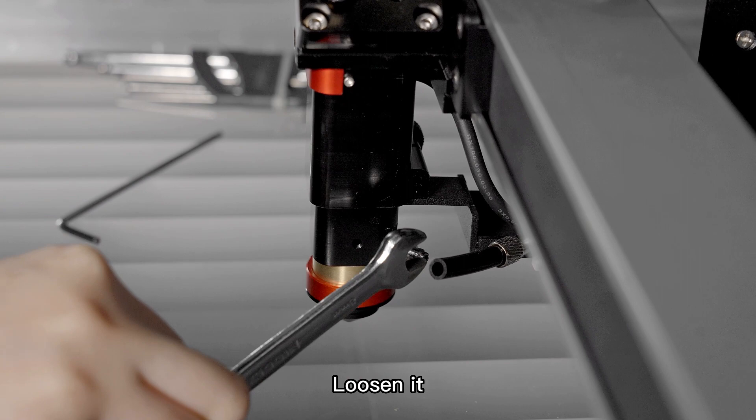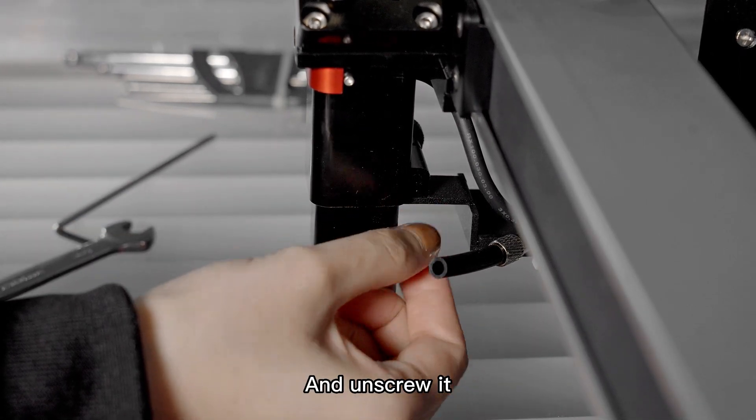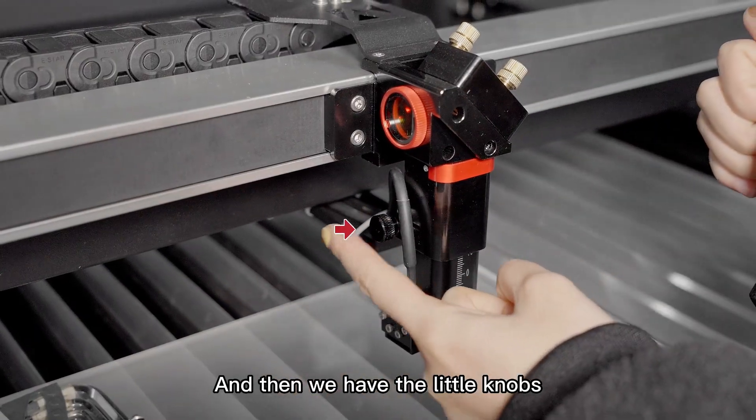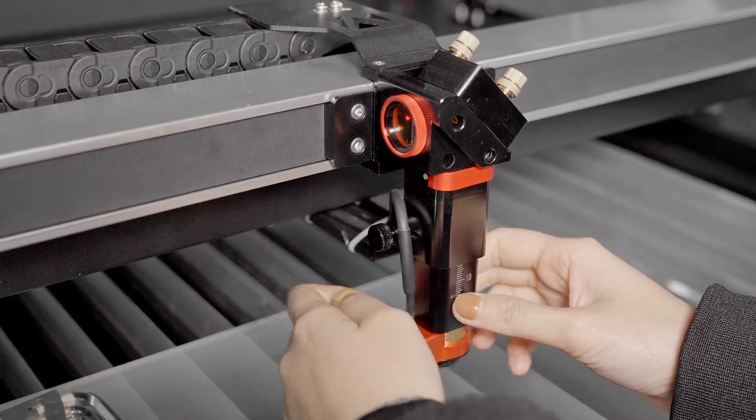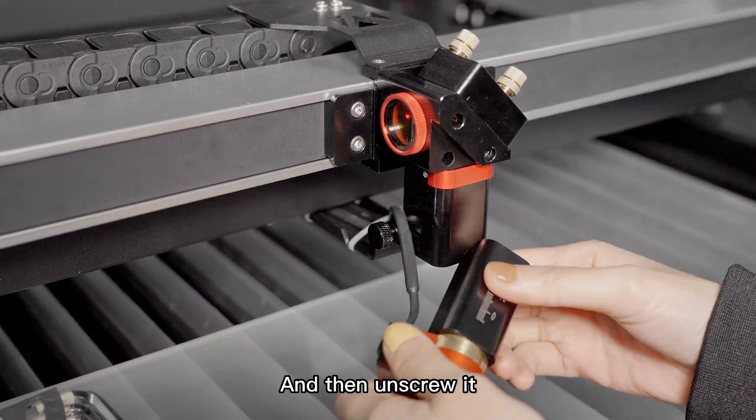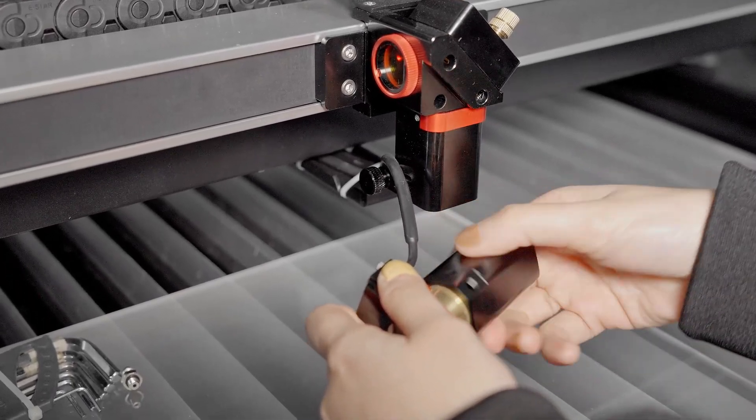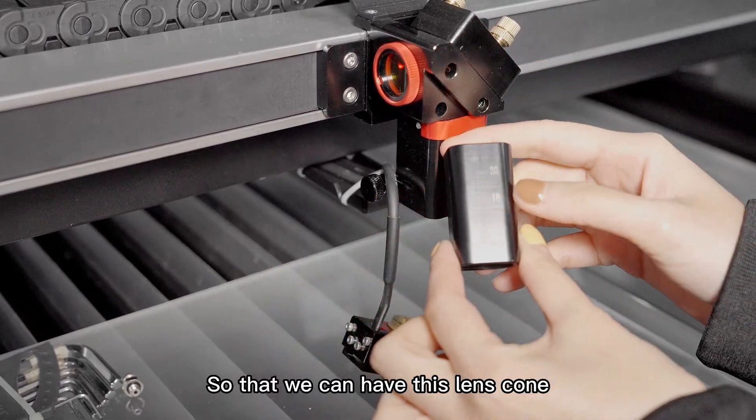Loosen it and unscrew it. And then we have the little knobs. We need to loosen it and then unscrew it so that we can have this lens cone.